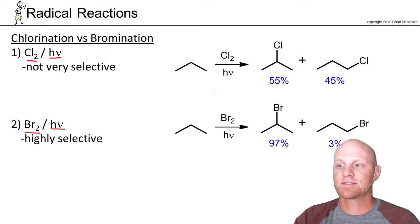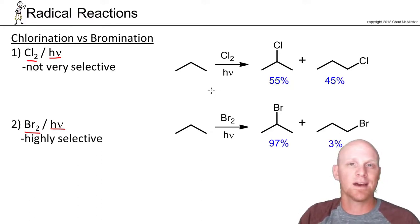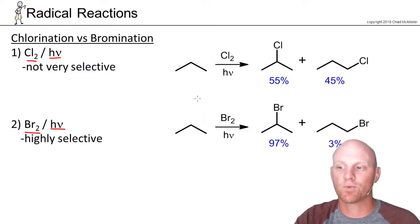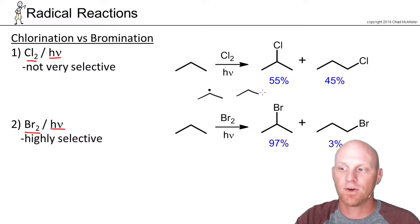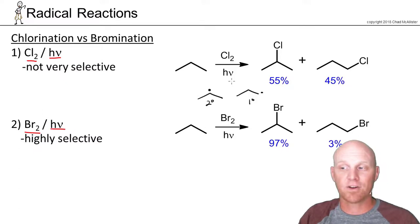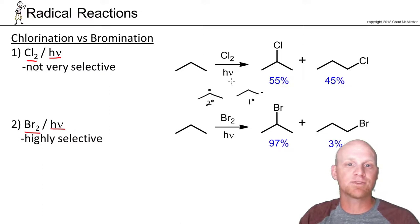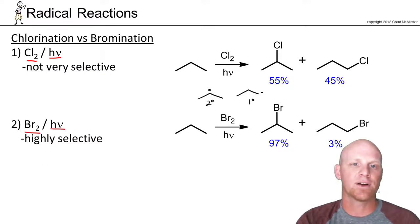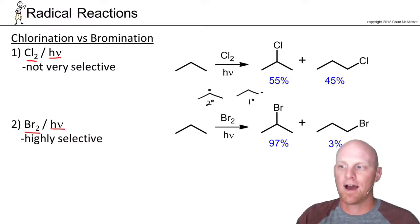This is a substitution reaction where we replace a hydrogen with a chlorine, generally on an SP3 hybridized carbon. The intermediate is a radical, and we have a couple of options — either a secondary radical or a primary radical. Secondary radicals are more stable and follow the same trend as carbocations. Because the secondary radical is more stable, that leads to the secondary alkyl halide forming as being potentially a little more likely.